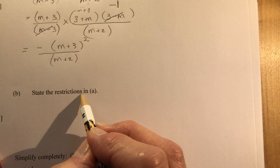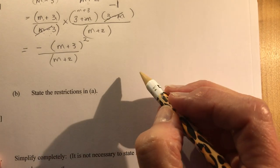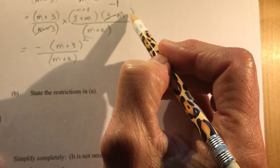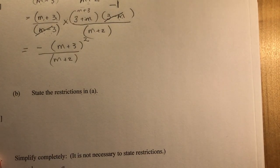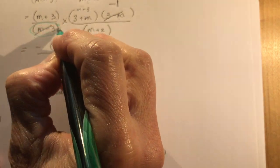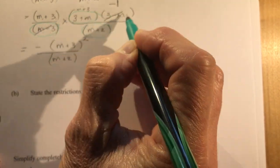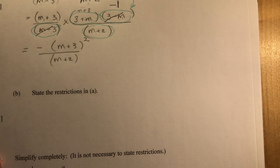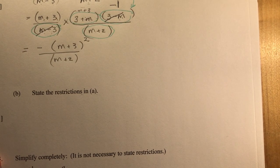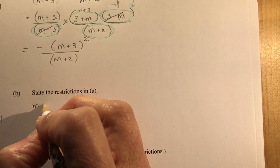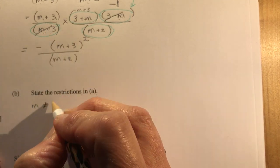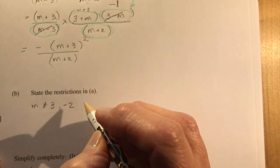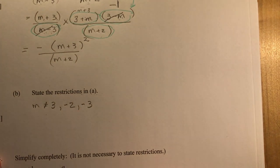It says state the restrictions. Restrictions have to be found as soon as you factor. There's actually three places I'm looking for restrictions here. Make sure you're finding all the places. So M is not equal to 3, minus 2, and minus 3. Make sure you list them all.